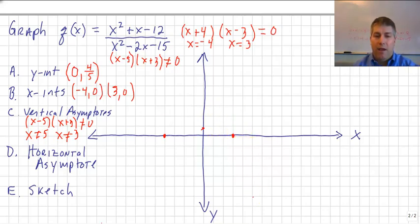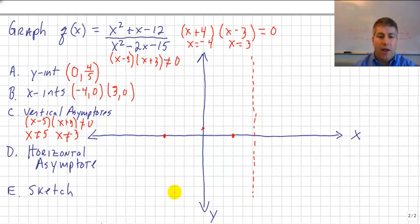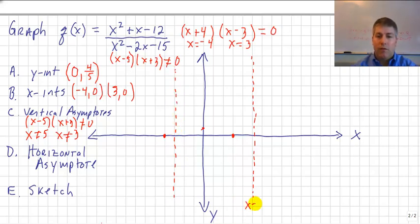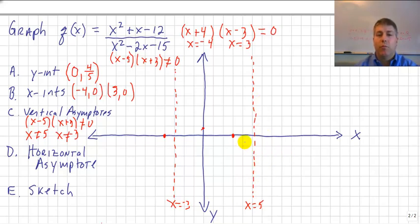I draw an asymptote at x equals 5 and an asymptote at x equals negative 3. These are the black holes — invalid inputs. Our graph is going to approach these lines from both the left and the right, but it will never touch them.